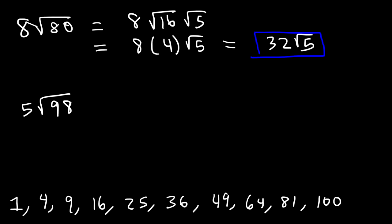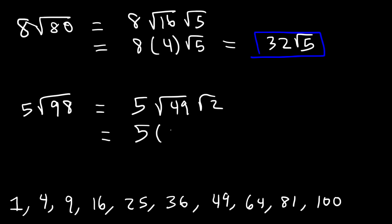For 5 times square root of 98, what perfect square goes into 98? 49 is half of 98, so write it as 49 times 2. The square root of 49 is 7, and 5 times 7 is 35. So the answer is 35 square root 2.